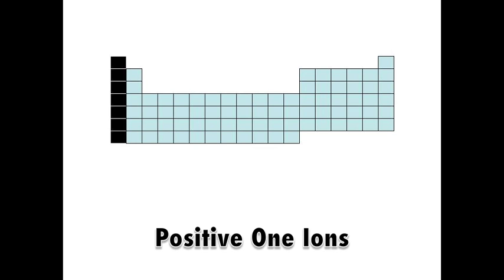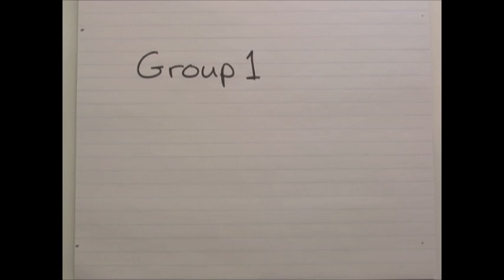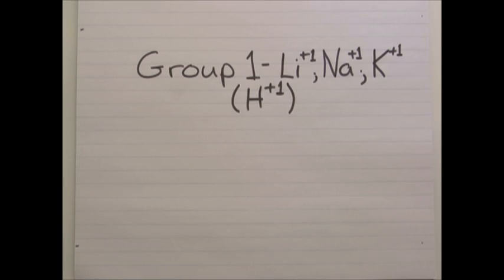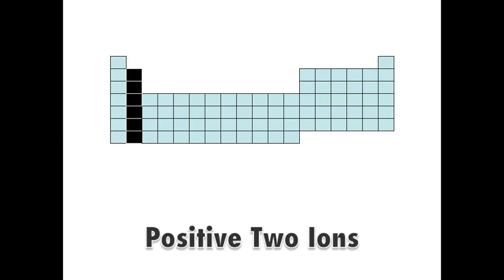If we look at positive 1 ions, we would see them coming from group 1 on the periodic table. They would include metals like lithium, sodium, potassium, all plus 1. Hydrogen is over there as well. It's not really a part of group 1, but it has a positive 1 charge.